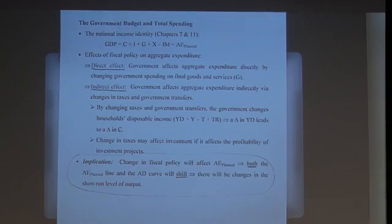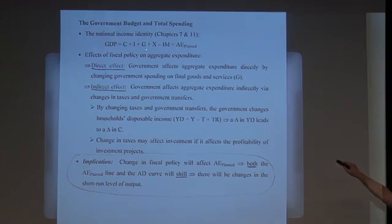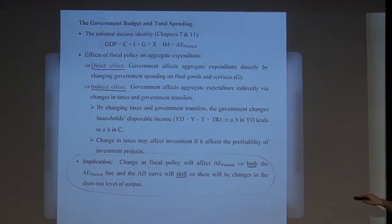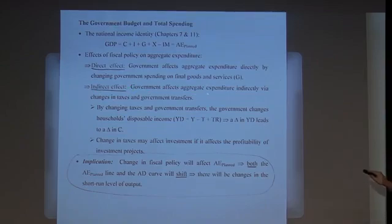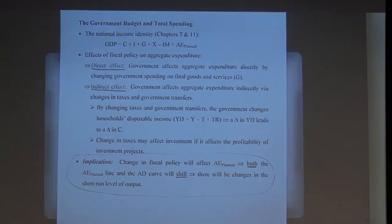Fiscal policy enters aggregate expenditure in two ways. It enters directly — G is right there — so when the government increases spending on final goods and services by a billion, planned expenditure goes up by a billion. There's also an indirect effect: changes in taxes and transfers enter through the consumption function, changing disposable income.